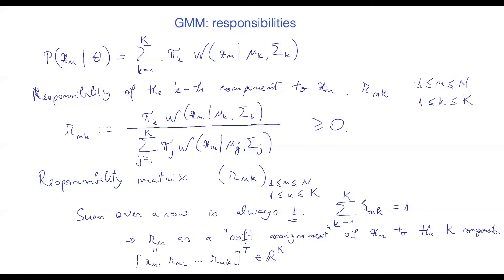So soft assignment of these data points, of these components, and the weight of that assignment is going to be given by each one of these components, rn1, rn2, and so on, rnk. So the sum over a row is always 1,